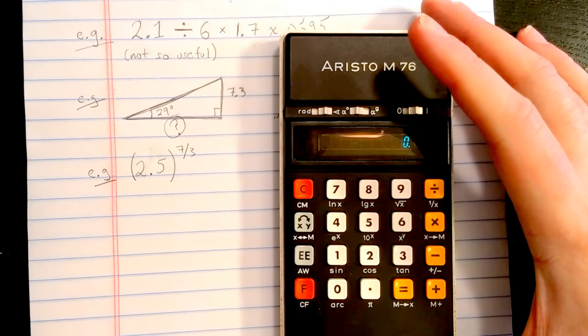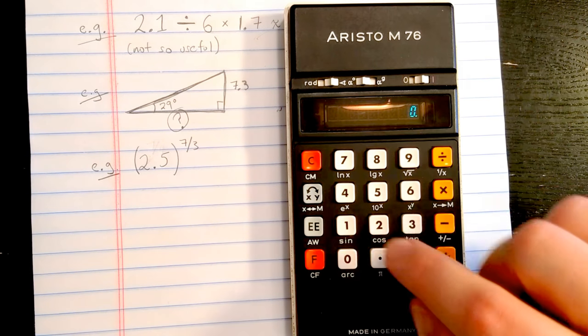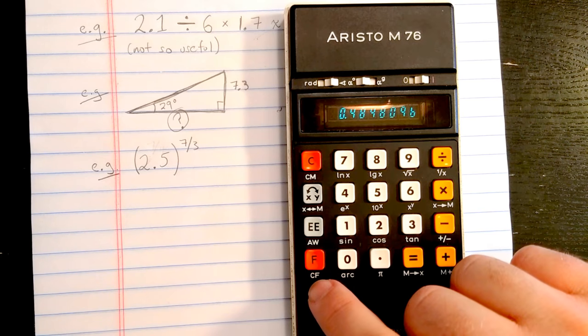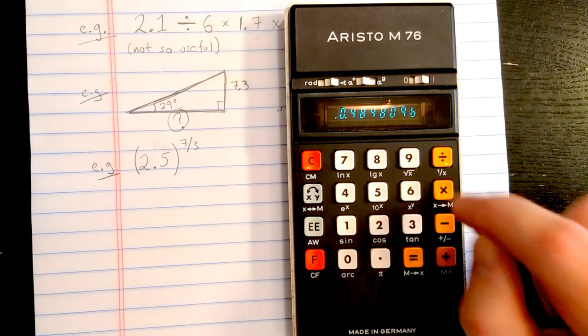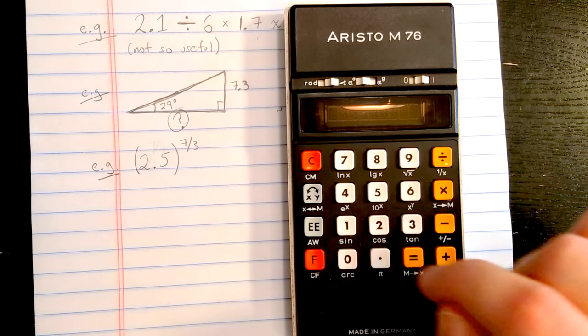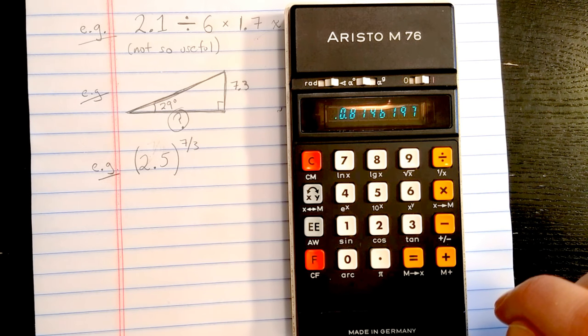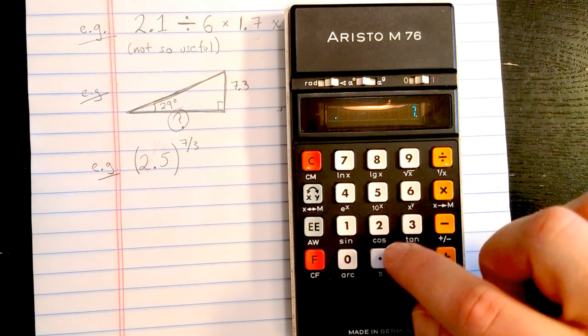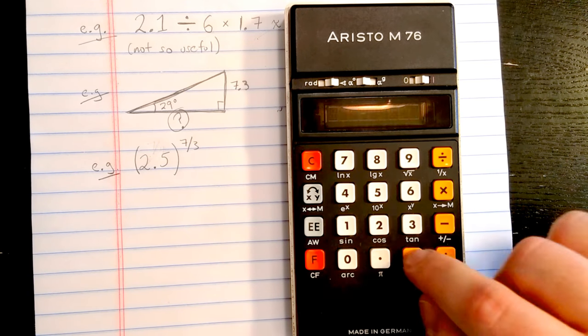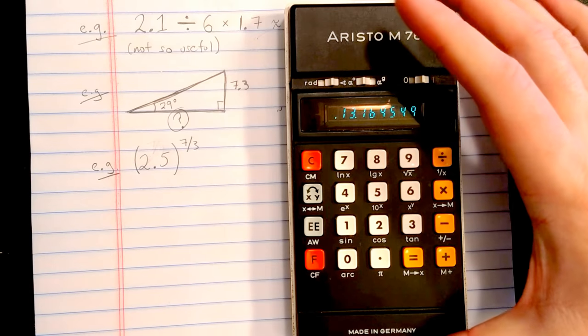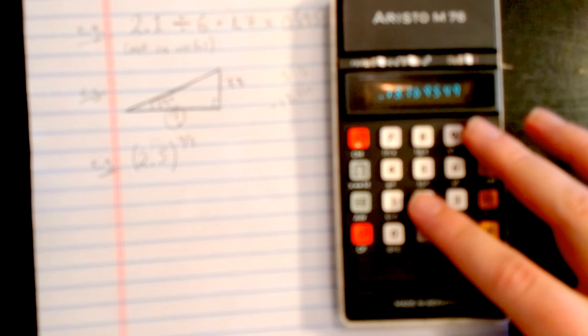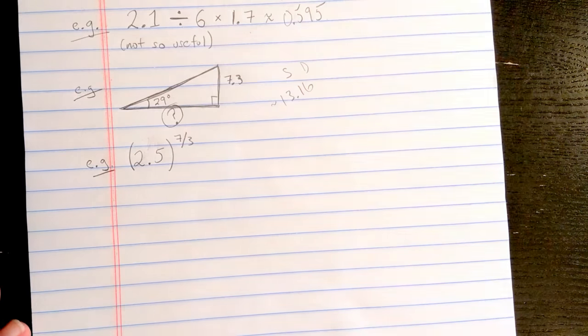So what I need. Let's see. 29, I need the sine. Let's store that to memory. Then I need 61, I need the sine. Then let's multiply 7.3, divide by what's in memory. 13.17. Not bad. That was much easier on the slide rule.